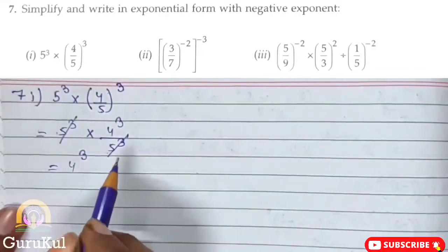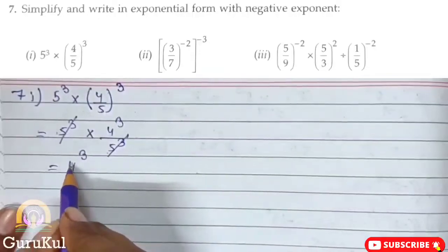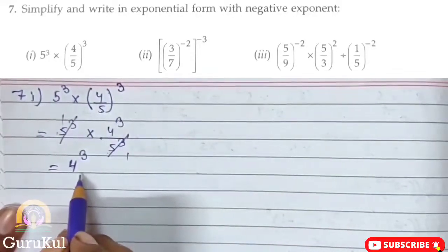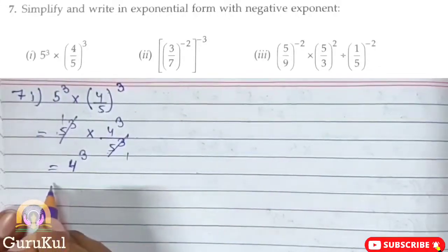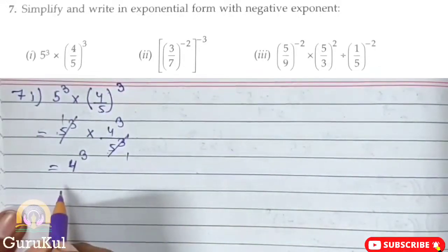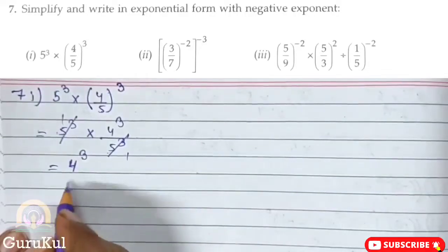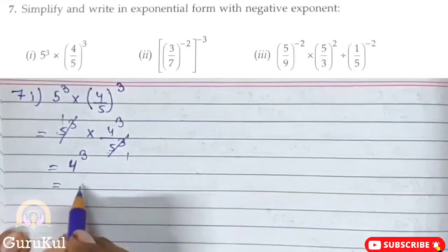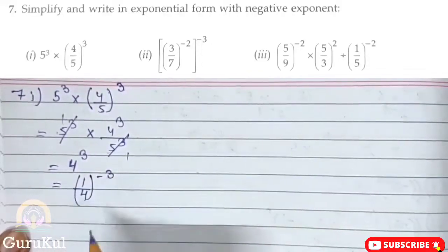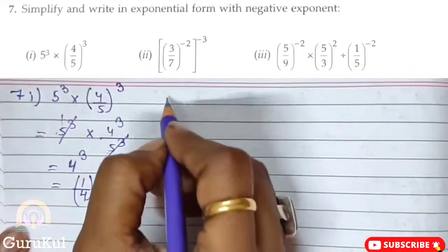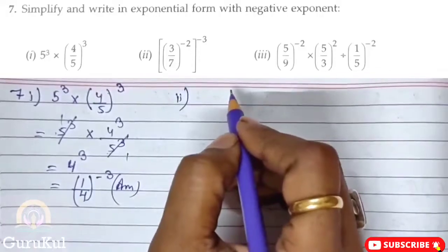Any number to the power 0 is 1, so what remains here is 4 to the power 3. Now this power is positive, but the question says we have to write in exponential form with a negative power. So we take the reciprocal: 1 by 4 to the power minus 3 — this is the answer.